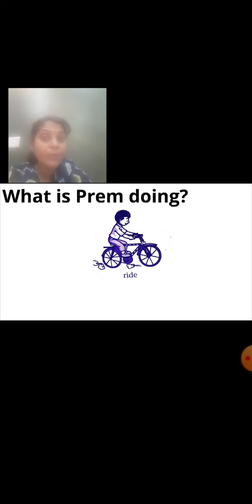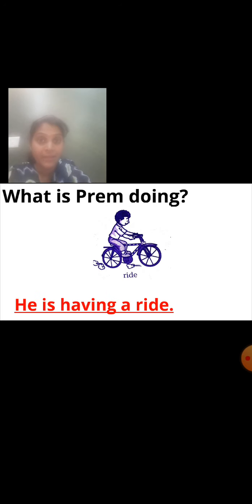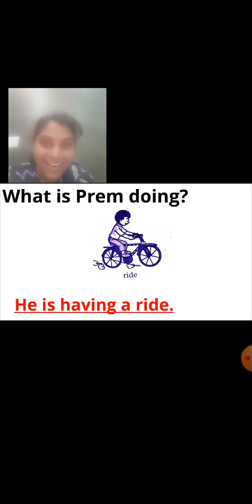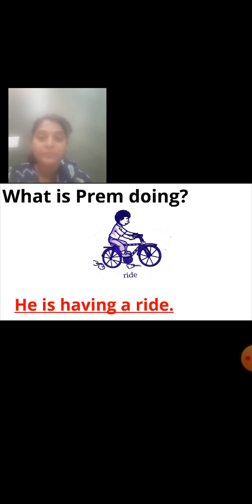Next question. What is Prem doing? See, now it is only one person — Prem. Look at the picture: he is riding a bicycle. So how will you write the answer? He is having a ride. We have taken the word 'ride' which is the help word given, and with that word we frame the answer. He is having a ride. Has Prem stopped riding the bicycle? No — still he is riding. So that's why we have used 'having' here.